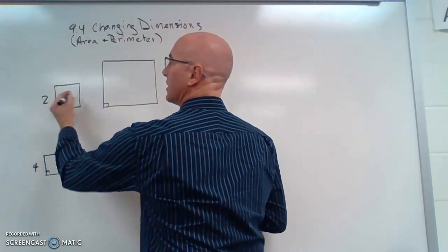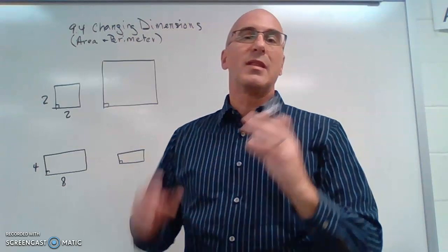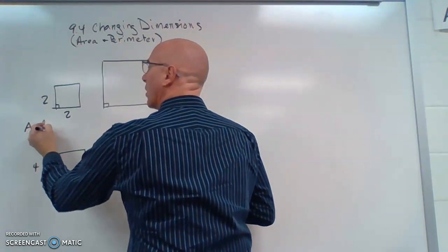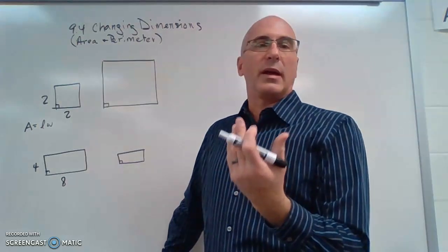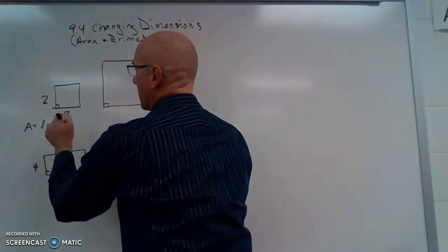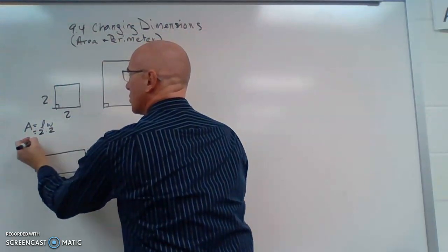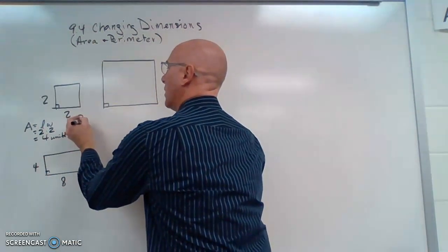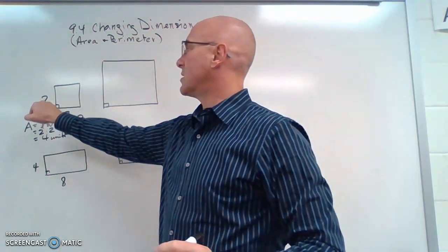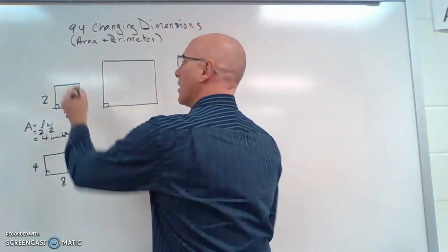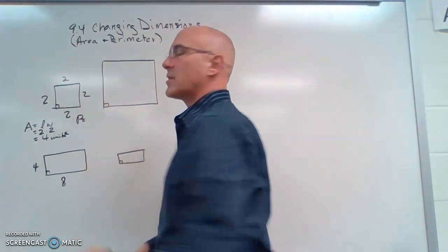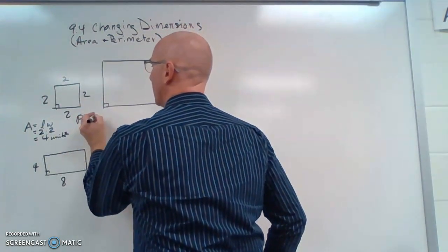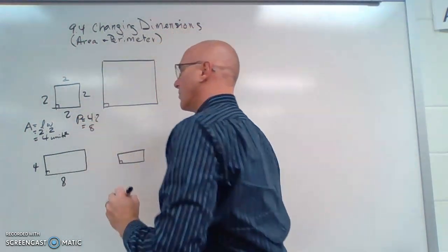Let's talk about what the area and perimeter are. The area is the amount of square units inside the figure. In a square, our area is determined by length times width. In this case, it's 2 times 2, which is 4 units squared. The perimeter is the distance around this square, and in a square all our sides are equal. So we have 4 times 2, which is 8 units.